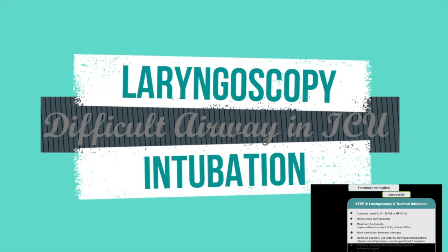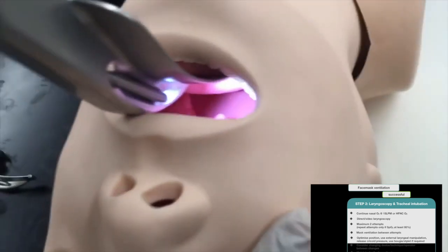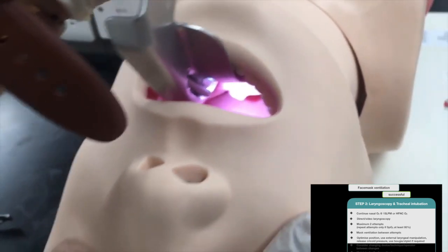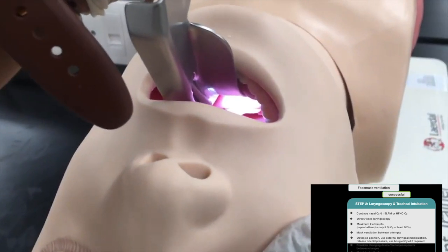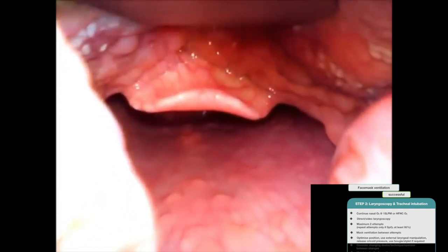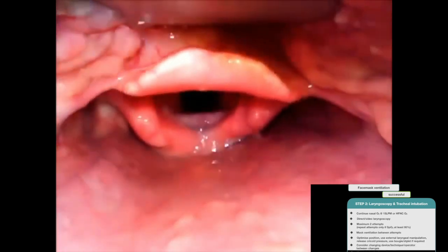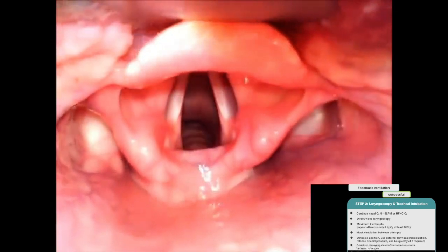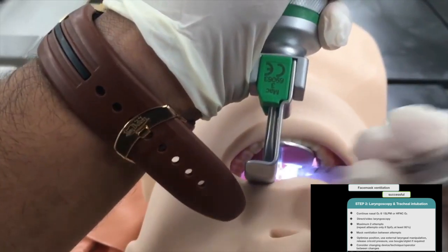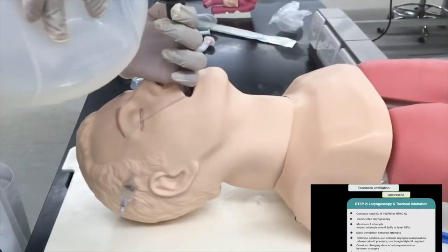To optimize the laryngoscopy view, optimize patient position, use external laryngeal manipulation, and partially or completely release cricoid pressure if required. Use a bougie or stylet if required. Between attempts, consider changing the device or technique rather than repeating the same technique. Maintain depth of anesthesia throughout all intubation attempts.